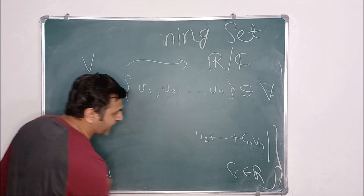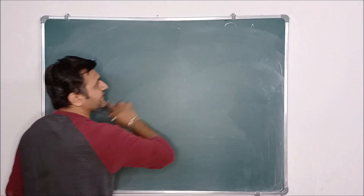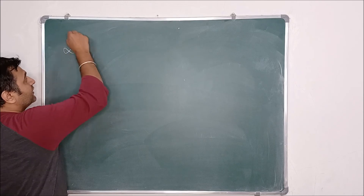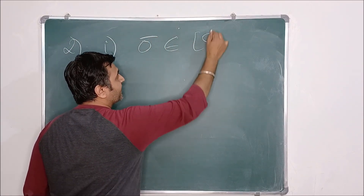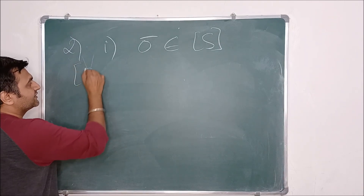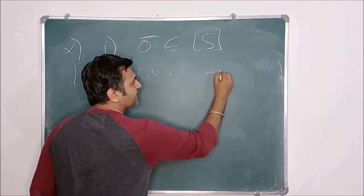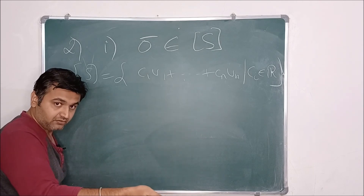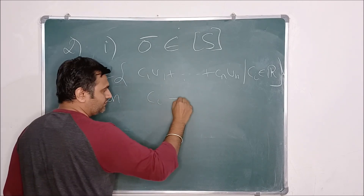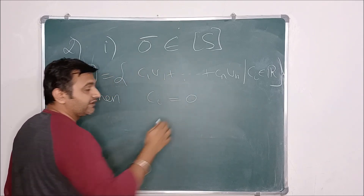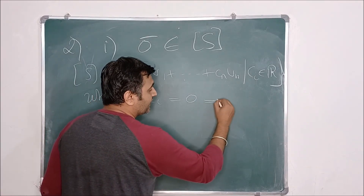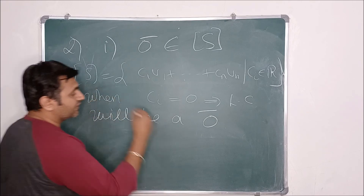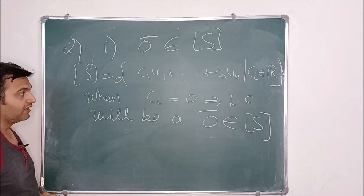Now we will see why this set forms a subspace. To prove something is a subspace, we prove three things. The first thing we show is that it contains a zero vector. Does it contain a zero vector? The answer is yes. Zero belongs to span of S. Why? Because span of S is by definition C1 V1 plus C2 V2 plus Cn Vn, where the Ci's are real numbers. When all Ci's are zero, the linear combination will be the zero vector. Therefore, zero belongs to span of S — so this is a non-empty set.